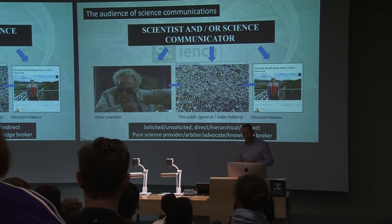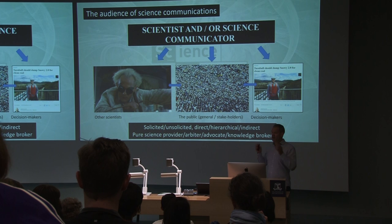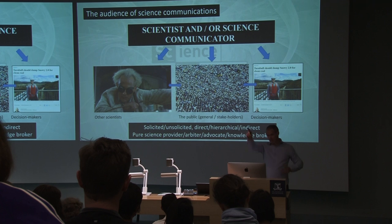Sometimes we offer science unsolicited to people. Sometimes it's actually asked from us. We might be asked by the Turnbull government, for example, to provide scientific expertise on an issue. Or they might ask someone else who doesn't necessarily know as much about the issue as you feel that you know. So how do you get your space into there? It's quite hard. Sometimes we're asked directly. Sometimes the process is quite hierarchical, as in someone over here wants to know, but it's going to go through a communication pathway before the science actually gets there.